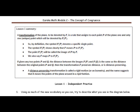A transformation on the plane, denoted by F, is actually a rule that assigns to each point P of the plane one and only one unique point, which will be denoted by F of P. So you have the original point P, and then you have the translated or the transformed P. By definition, the symbol F of P denotes a single point. The symbol F of P shows clearly that F moves P to F of P. The point F of P will be called the image of P by F. We also say F maps P to F P.